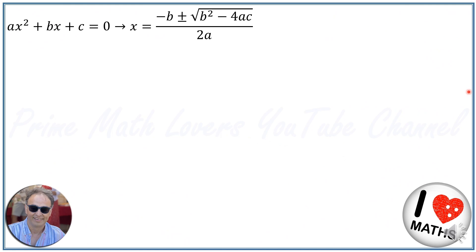Firstly, I rewrite the equation as ax squared plus bx is equal to minus c, moving c to the other side.